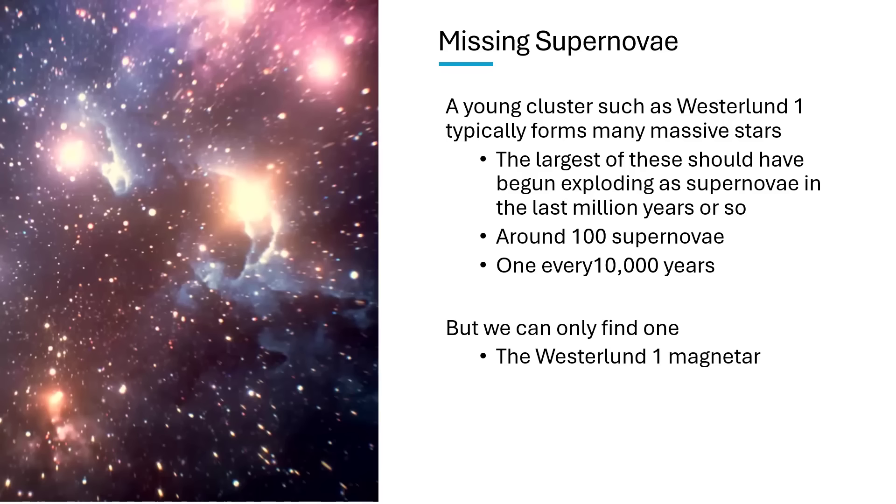So interestingly, in Westerland 1, we have young stars, less than four to five million years old, and very many large ones. And these large stars should have begun to explode. We should, in the last million years or so, have seen one every 10,000 years detonating as supernovae, so 100 events. But we can only find one inside the cluster that is clearly the remnant of a supernova, and that is the Westerland 1 Magnetar.